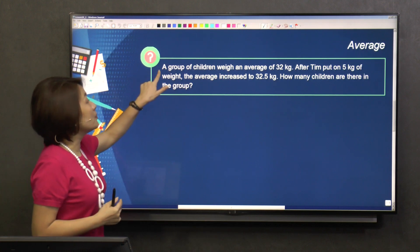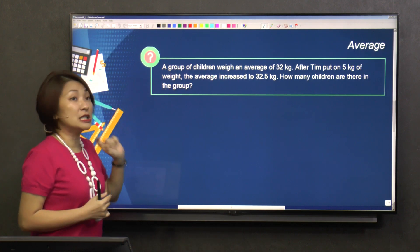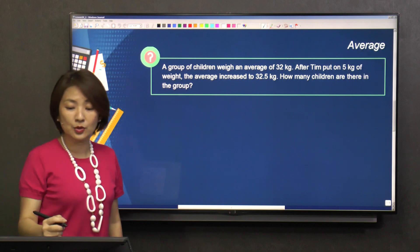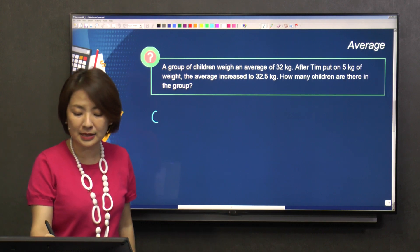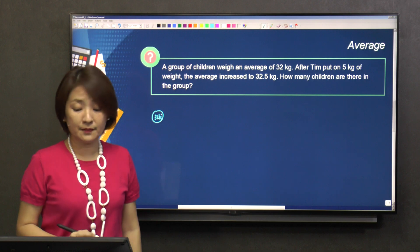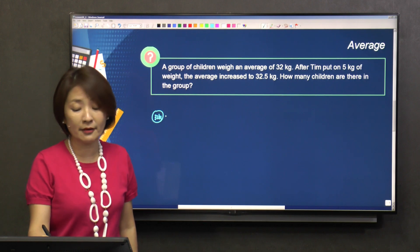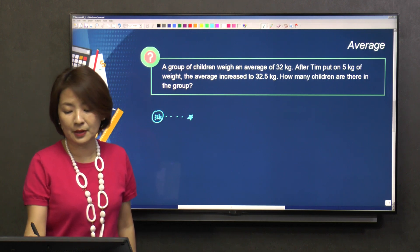I just looked at the first sentence. They say a group of children weigh an average of 32 kilograms. I will know that each child weighs 32 kilograms. And then, how many children do I have? Star number of children.